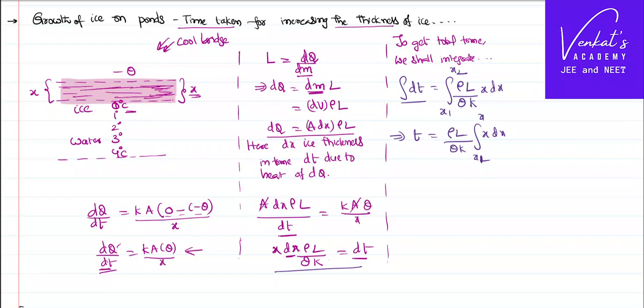We have a formula in integration: integral of x^n dx is x^(n+1) by (n+1). We know that formula. So time taken can be written like rho L by theta k times x^2/2 where x is varying from x1 to x2. So I can write it as rho L by 2 theta k times (x2^2 - x1^2). This is the expression that we need to know.